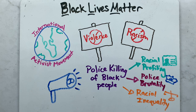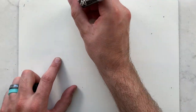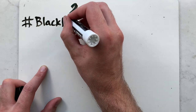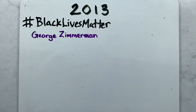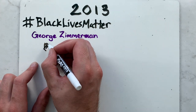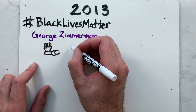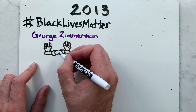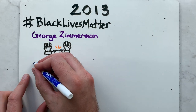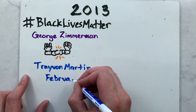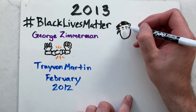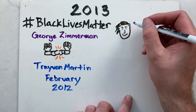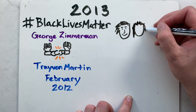Now that we know what problems the BLM is trying to solve, let's take a look at how it got started. In 2013, the movement began with the use of the hashtag BlackLivesMatter on social media after the acquittal of George Zimmerman and the shooting death of African American teen Trayvon Martin in February 2012. The movement was co-founded by three Black community organizers: Alicia Garza, Patrice Kohlers, and Opal Tometi.